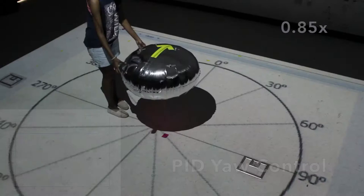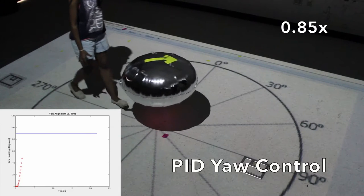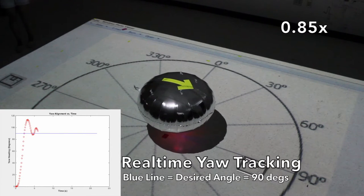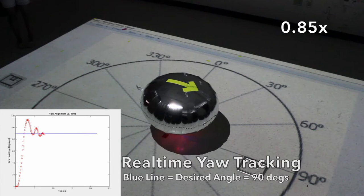After the blimp was fully built, controlling its motion was the next step. Using system identification, a mathematical model of the blimp's heading angle, or yaw, was created. From there, a PID controller was implemented to control the yaw.